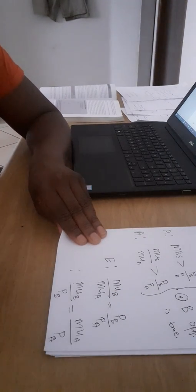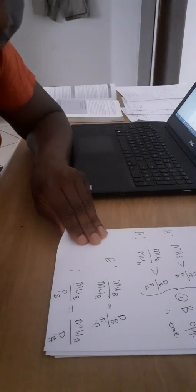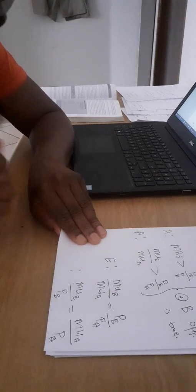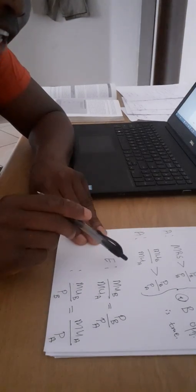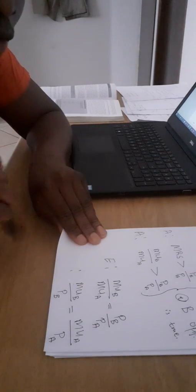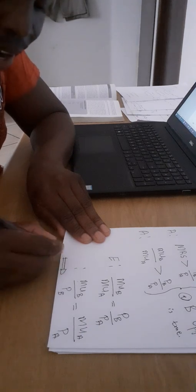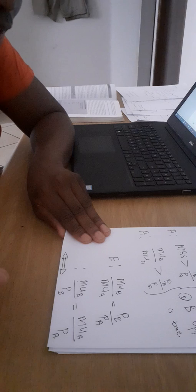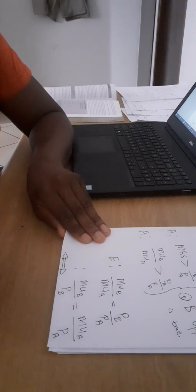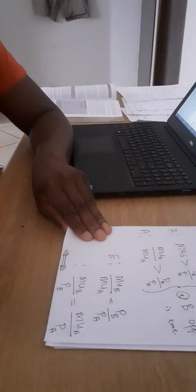The take-home point is that at consumer equilibrium the ratio of prices equals the ratio of marginal utilities. The ratio of prices is the slope of the budget line, and the ratio of marginal utilities is the slope of the indifference curve — also called the marginal rate of substitution. Please review these videos until you understand marginal utility, marginal rate of substitution, the budget line, and the indifference curves. Thank you very much.